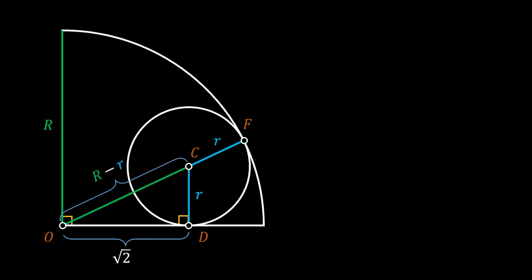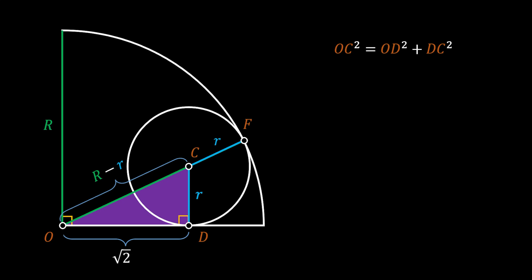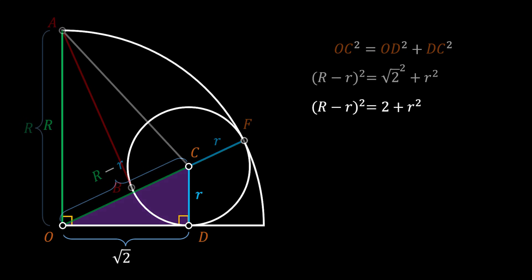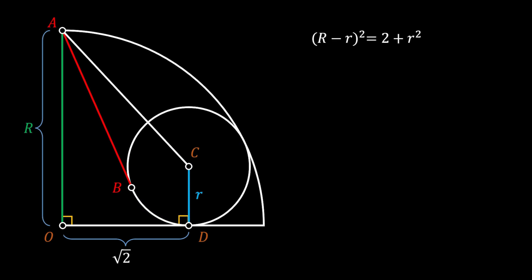Now we can see right triangle OCD and apply the Pythagorean theorem. The hypotenuse OC squared must equal leg OD squared plus leg DC squared. Substituting our values, we can simplify this to get that the squared quantity of the difference between the radius of our big quarter circle and our smaller circle equals 2 plus the squared radius of our smaller circle: (R - r)² = 2 + r².